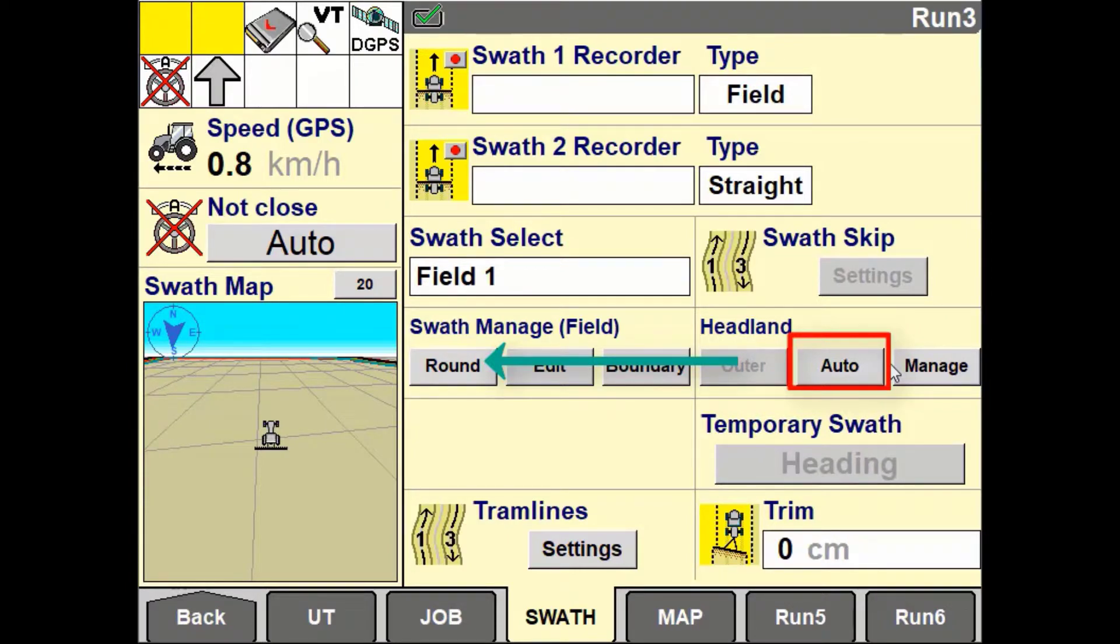When either square headland or round headland is selected in the swath manager window the headland operation mode automatically changes to outer.